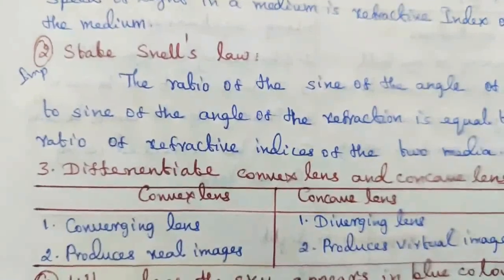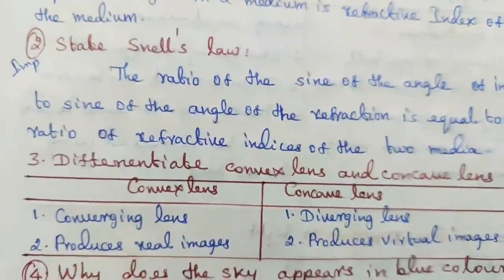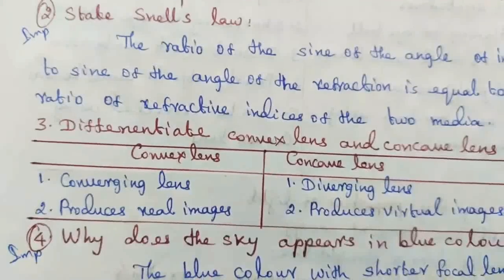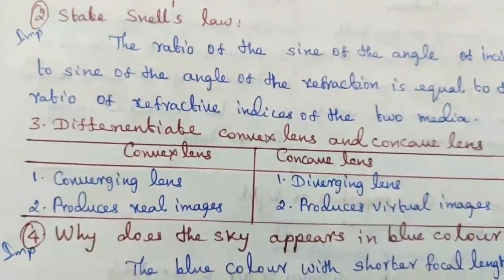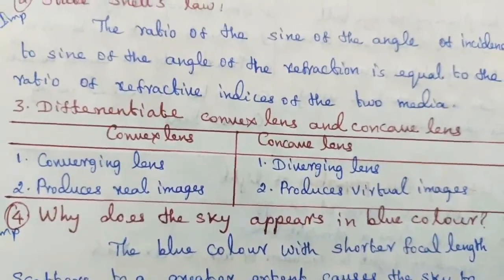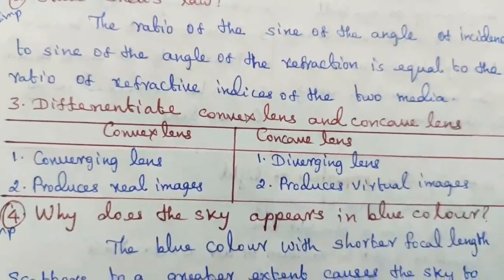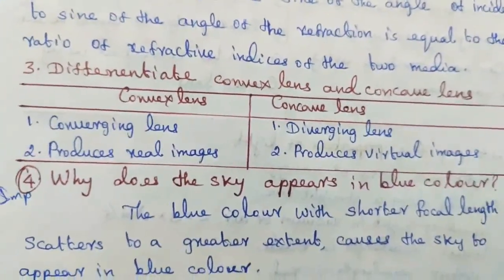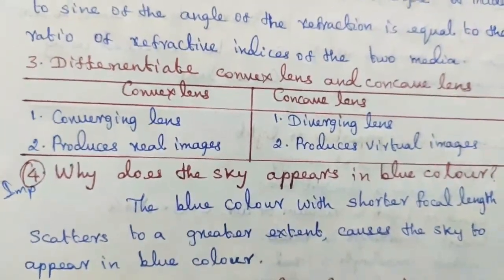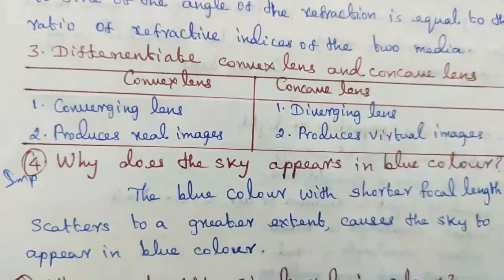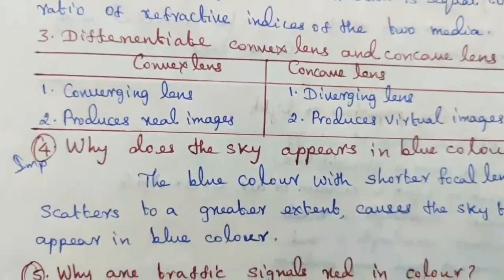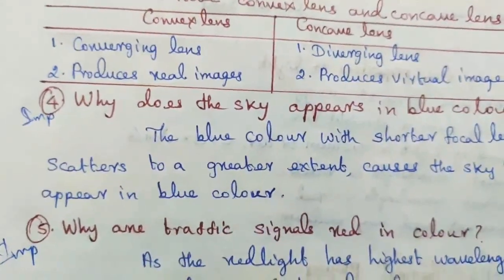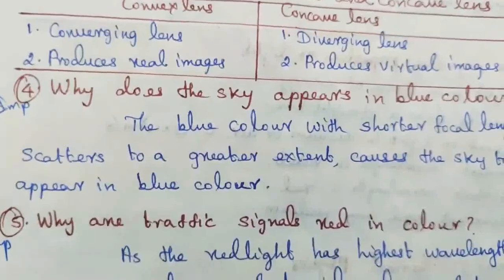Question number four, important: why does the sky appear blue in color? Blue light, having a shorter wavelength, scatters to a greater extent, causing the sky to appear blue in color.